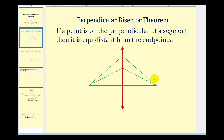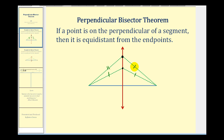So if we have this blue segment and this red perpendicular bisector, if we consider any point on the red line — for example, this point here and this point here — this theorem tells us that these two black points will be the same distance from the two endpoints. In other words, this green segment here is congruent to this green segment here, and this green segment here is congruent to this green segment here.